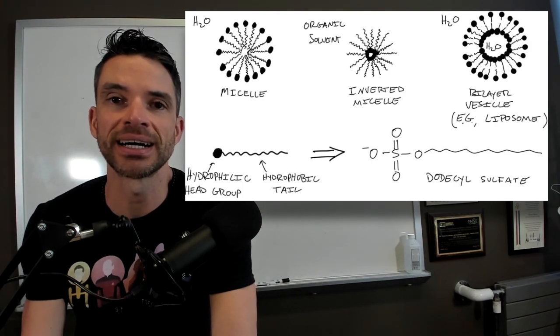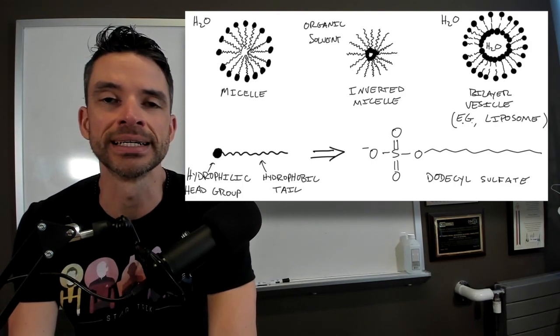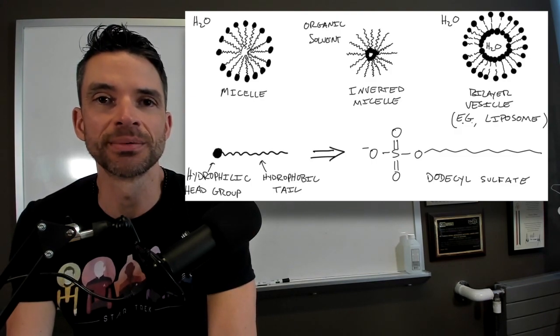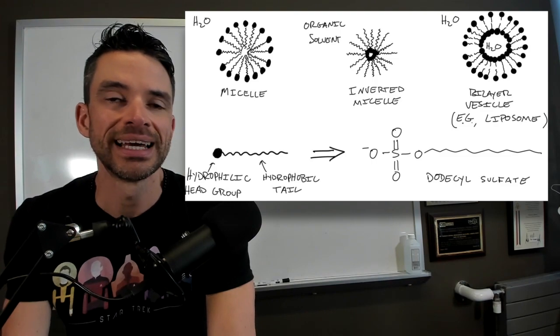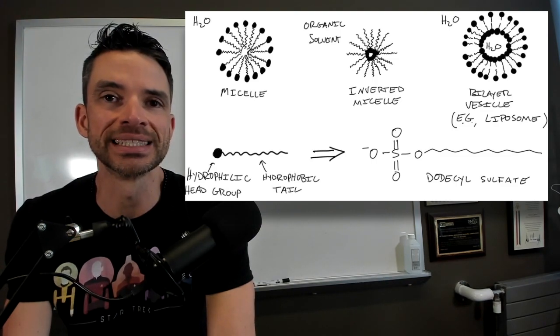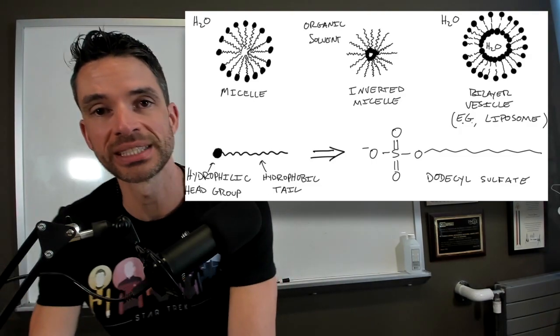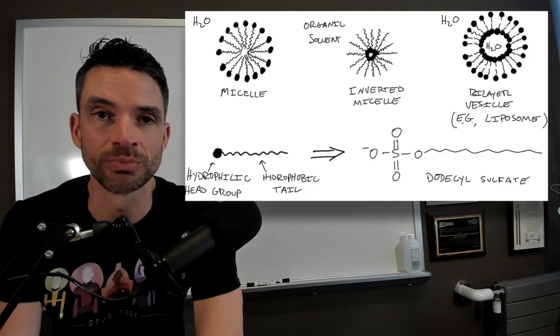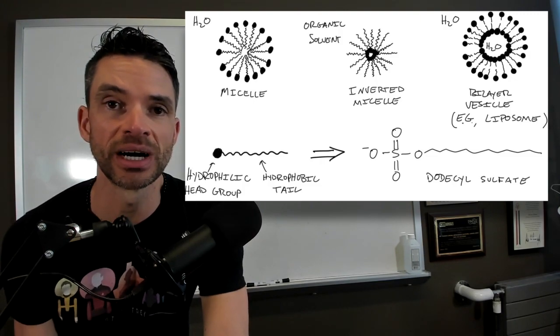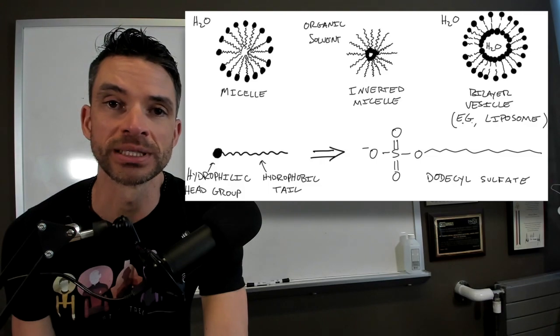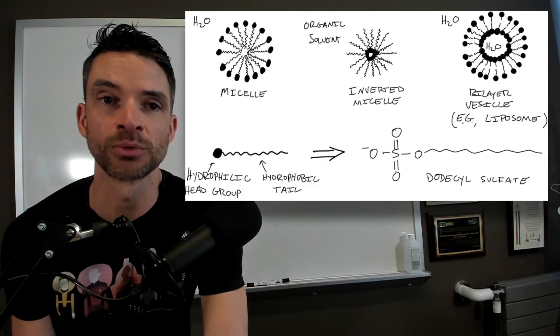If you have different kinds of structures that are more cylindrical based, then they might form something called a bilayer vesicle. Usually this is like a phospholipid bilayer, an example of a bilayer vesicle. A liposome, which might have delivered your mRNA vaccine if you got one, was probably delivered in a liposome as well.